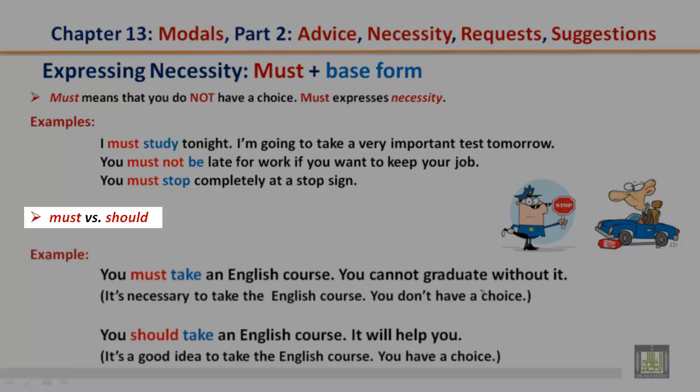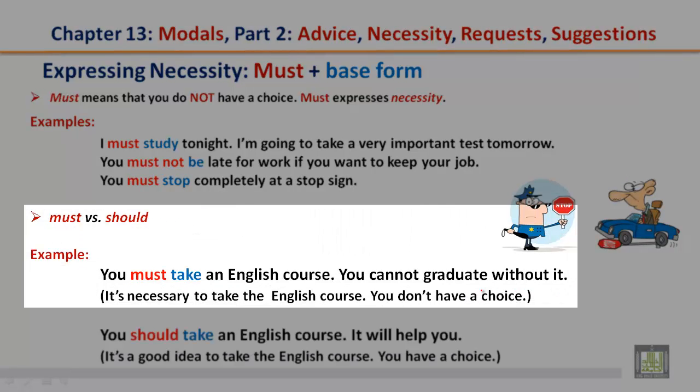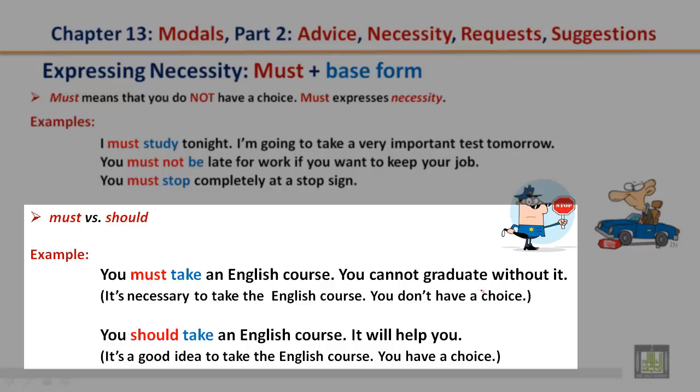Must versus should: You must take an English course. You cannot graduate without it. It's necessary to take the English course. You don't have a choice. You should take an English course. It will help you. It's a good idea to take the English course. You have a choice.